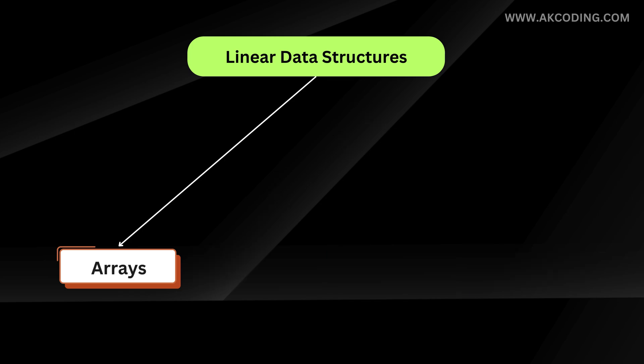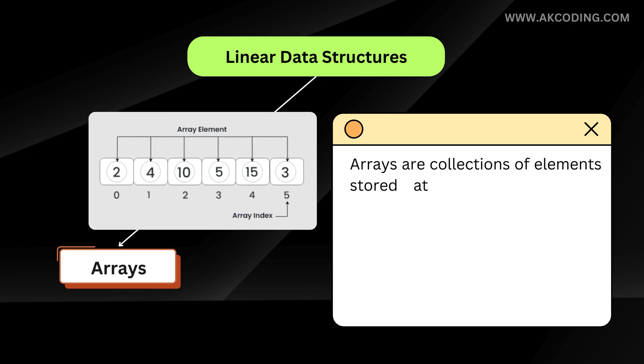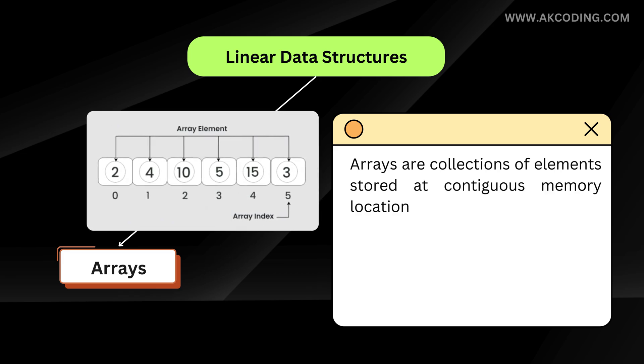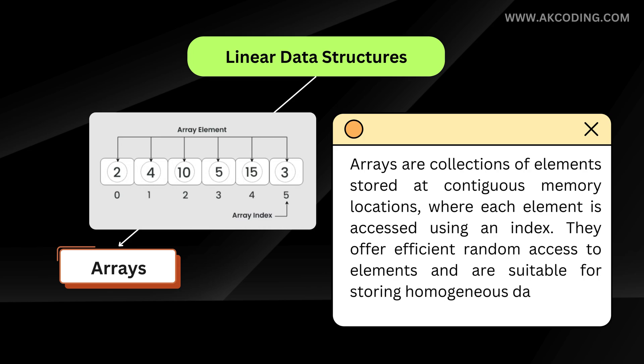Arrays are collections of elements stored at contiguous memory locations where each element is accessed using an index. They offer efficient random access to elements and are suitable for storing homogeneous data.